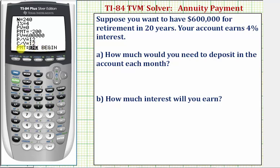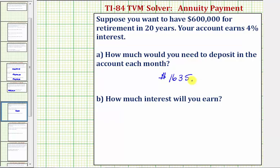We leave the last option for payment highlighted on End. Now we go back up to the payment row. To solve for the monthly payment, we press Alpha then Enter. Notice how this amount is negative because we have to pay this amount each month. The monthly deposit would have to be $1,635.88 to the nearest cent.